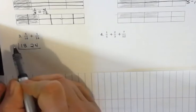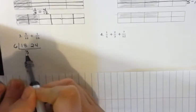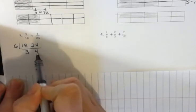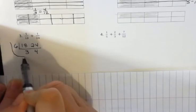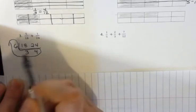So, what number goes into both of these? Well, 6 goes in. 6 goes into 18, 3 times. 6 goes into 24, 4 times. And there's nothing that goes into 3 and 4, aside from 1, which doesn't help.